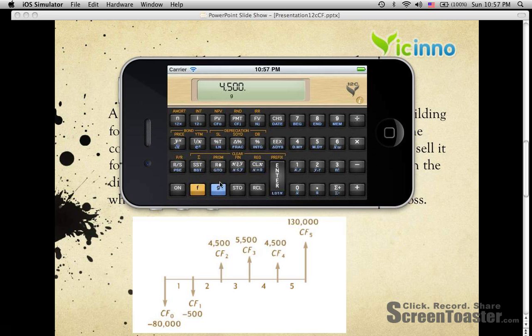And then the last cash flow is $136,000, and then pressing G, pressing CFJ.